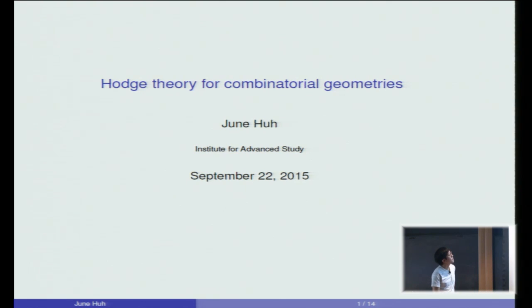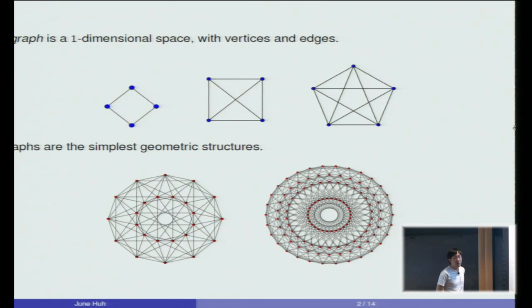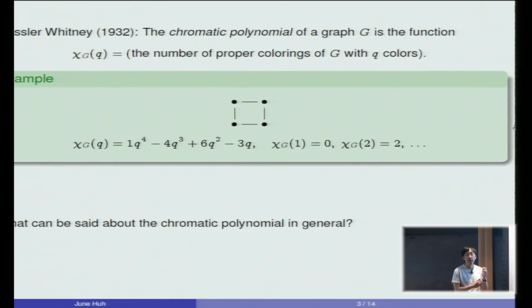So in its most basic version, the problem concerns graphs. As you know, a graph is just a one-dimensional space with vertices and edges. It could be small or large, simple or complicated, but it is what it is. They have just two components: vertices and edges. Whenever you have a graph, you can associate numerical invariants, one of them being the chromatic polynomial. So this is a function that I'll write by chi of G, where G is your graph, whose value at positive integer Q is the number of proper colorings of your graph using Q colors.